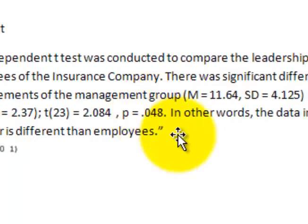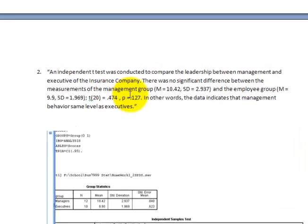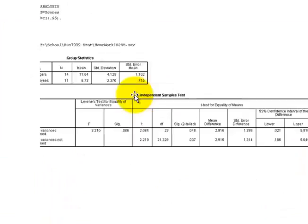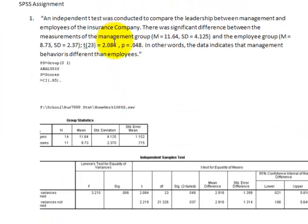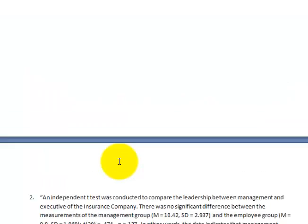And the bottom one — you did good. You did the t-test correctly. You got the right p-value. So there was a significant difference in the first one. There was not in the second one.